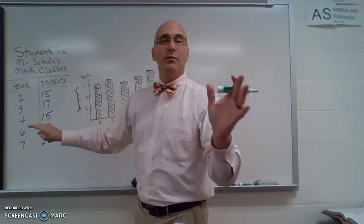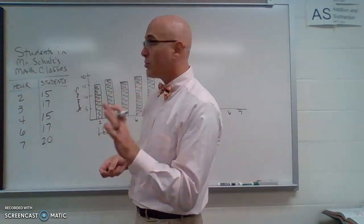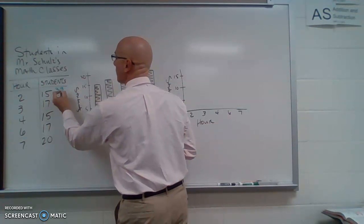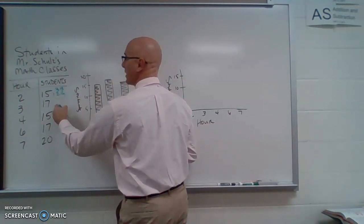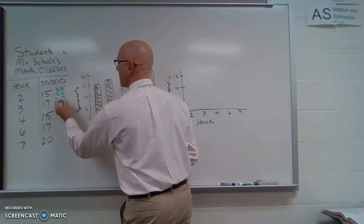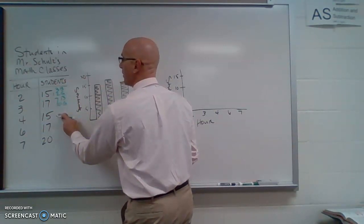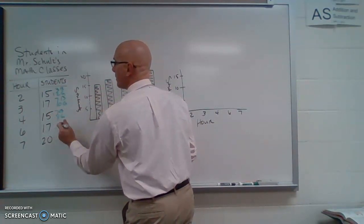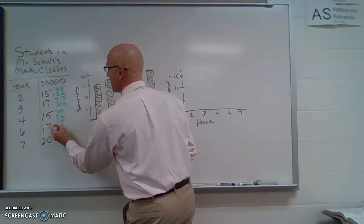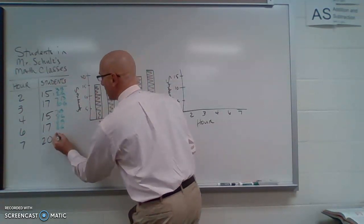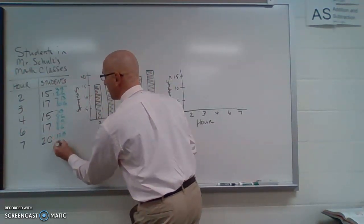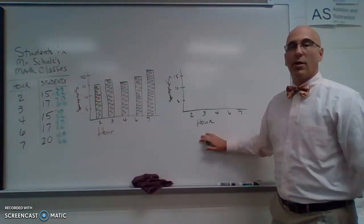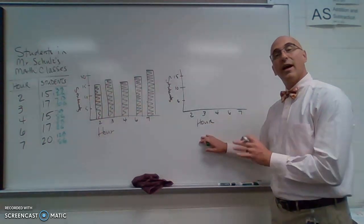So I have already looked this up. So these are my actual numbers. So 2nd hour, I have 3 boys and 12 girls. 3rd hour, I have 7 boys and 10 girls. In 4th period, I have 7 boys and 8 girls. 6th period, 8 boys and 9 girls. And my last period class, I have 12 boys and 8 girls.